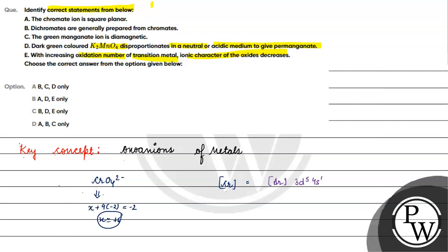For the +6 oxidation state, the electronic configuration is argon - all 6 electrons removed. The d orbital becomes vacant. The hybridization will be sp3, and this structure is tetrahedral, not square planar. So option A is incorrect.